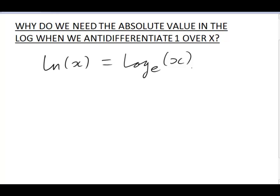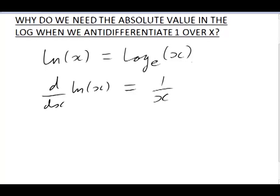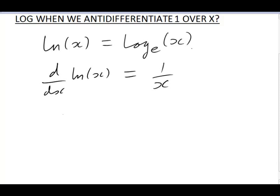When you first learn to differentiate, you quickly learn how to differentiate the natural log. We have d by dx of ln of x is 1 over x. Once we start integrating, or anti-differentiating, it's natural enough to deduce that the integral of 1 over x dx must be ln of x, possibly plus a constant.